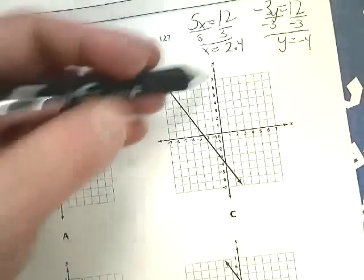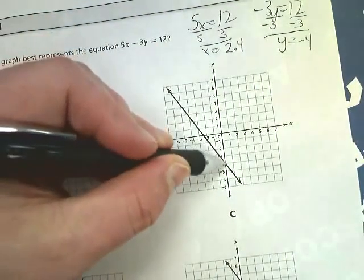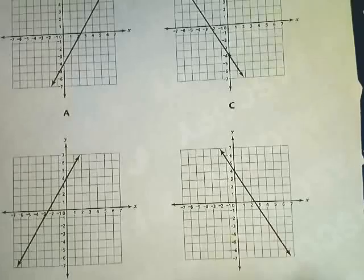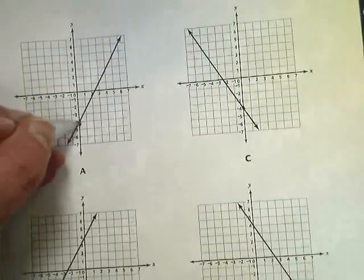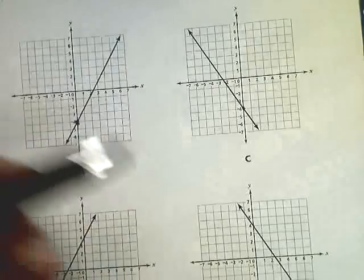Now these are my intercepts on the graph, so I'm going to go down, find one where y equals negative 4. Well, here's one. Here's another one. So it's either A or C right off the bat.